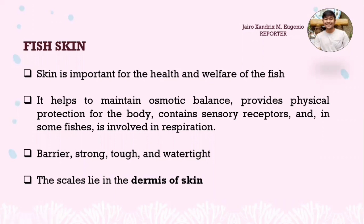Fish skin is important for the health and welfare of the fish. It helps to maintain osmotic balance — the process of maintaining salt and water balance across membranes within the body's fluids. It provides physical protection, contains sensory receptors, and in some fish like mudskippers, it is involved in respiration. The skin provides a strong, tough, watertight barrier. The scales lie in the dermis of the skin.